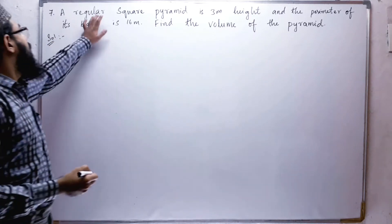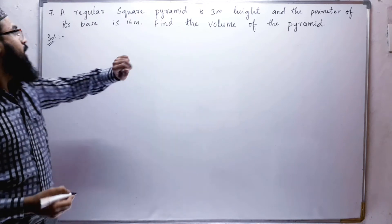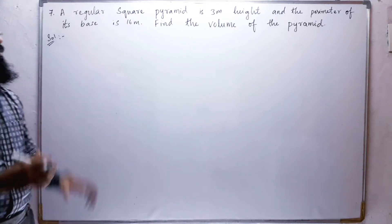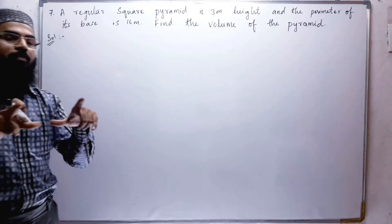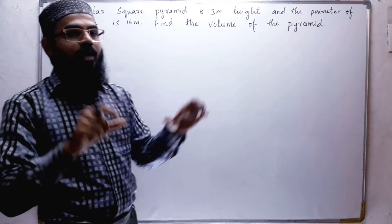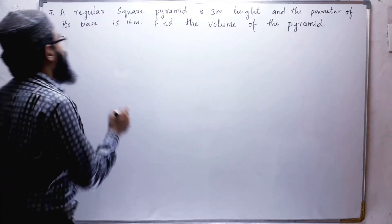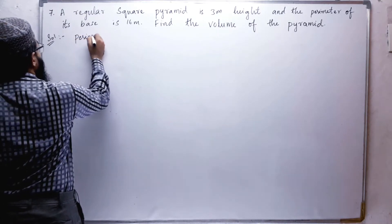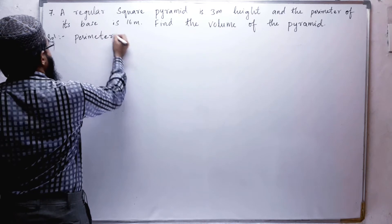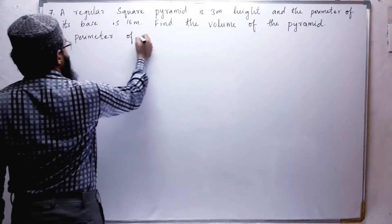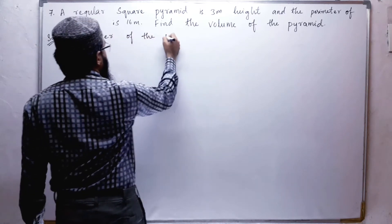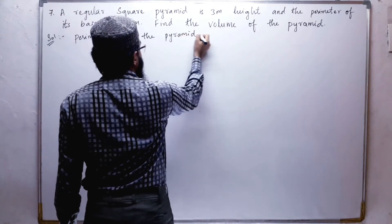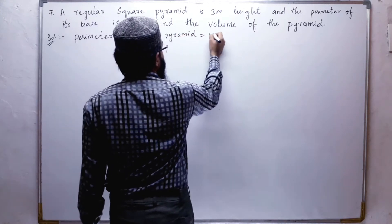What have they given? They have given the height and the perimeter of the base. A pyramid will have a square base. So the given perimeter of the pyramid is equal to 16 meters.